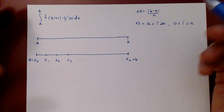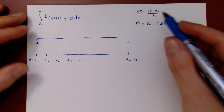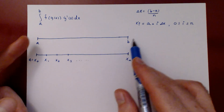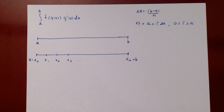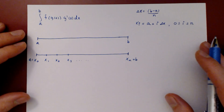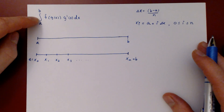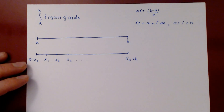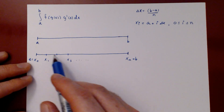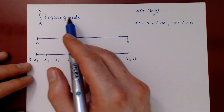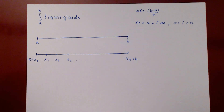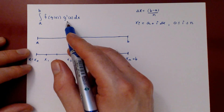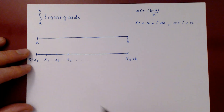We do not have to take a uniform partition — dividing the interval from a to b into n equal-length intervals is just for simplicity. Now we can rewrite the integral as the limit of the corresponding Riemann sum, evaluating the function at the right-hand point of each interval for simplicity.